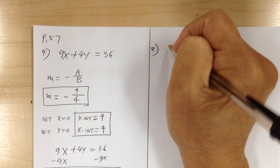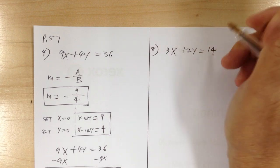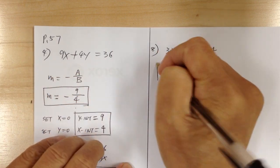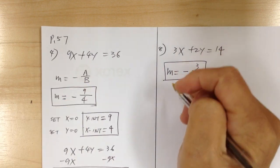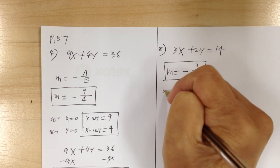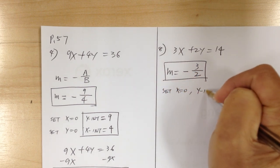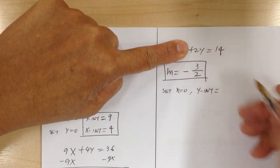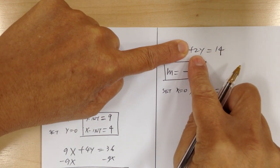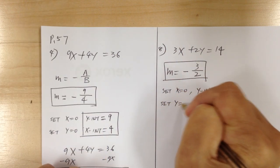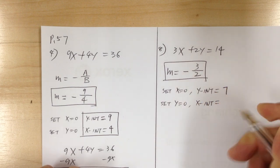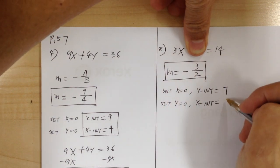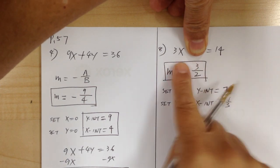Number 8: you have 3x plus 2y equals 14. Slope equals negative a over b, so slope equals negative 3 over 2. Set x equal to 0 to find the y-intercept — divide both sides by 2, so y-intercept equals 7. Then set y equal to 0; divide both sides by 3, so x-intercept equals 14 over 3.